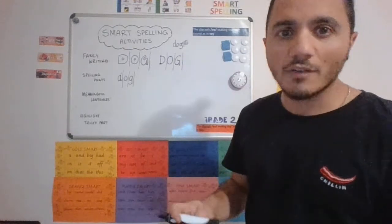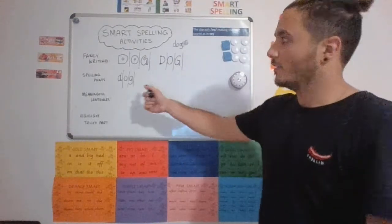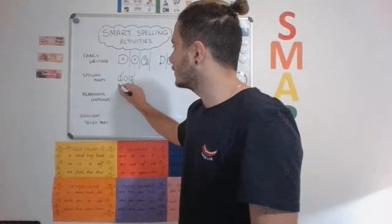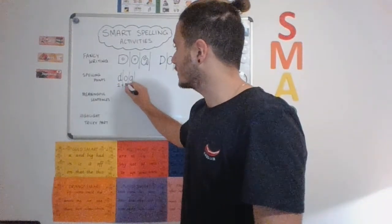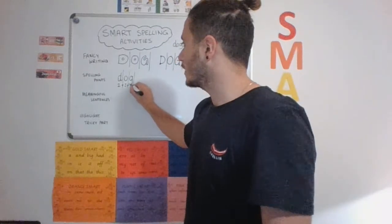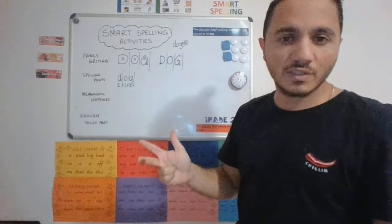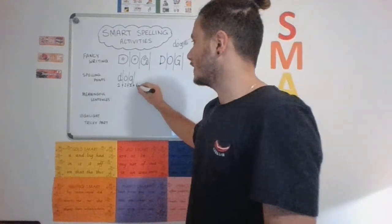And if there's a quadgraph, a quadgraph will be worth twenty. There's only graphs in the word dog, so it'll be two plus two plus two equals six.